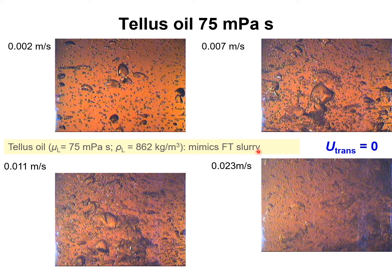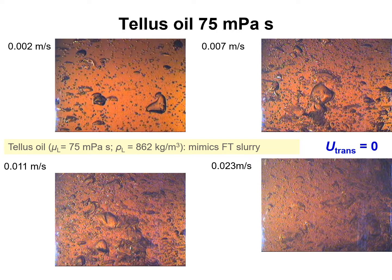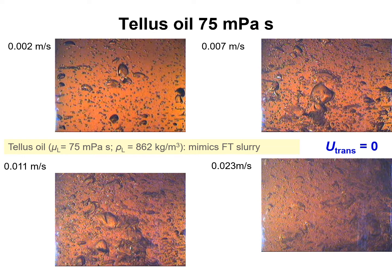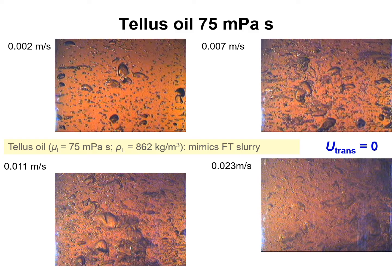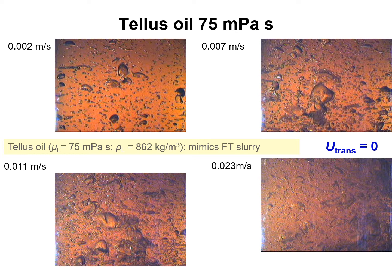Examining the bubble hydrodynamics at a superficial gas velocity of 2 millimeters per second in tallus oil, we already see that the flow regime is heterogeneous — we have small bubbles and also larger bubbles. Increasing the gas velocity to 7 millimeters per second, we see large bubbles coexisting with small bubbles. At 1.1 centimeters per second, we again see heterogeneous flow with large and small bubbles coexisting.